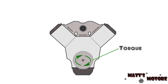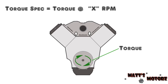Torque is a measure of how much twisting force an engine produces. An engine's torque output will vary depending on how fast it's spinning, or the RPM. So any spec of torque needs to be followed with a specification of how fast the engine is spinning, because the torque is different at every RPM.